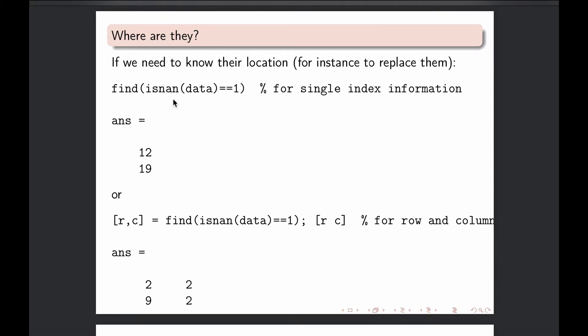So again, FIND works so that it finds things which are non-zero. So in this case, when we enter isNAN data equals one, please notice the double equality, which means we are asking where the data is one. So this brings us a bunch of zeros and ones, and FIND will point out in which position we have our ones in here.